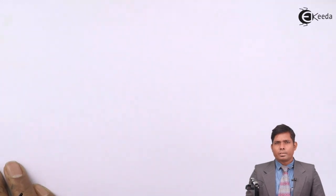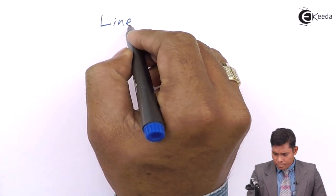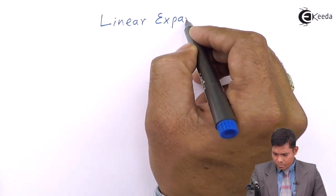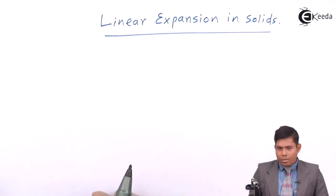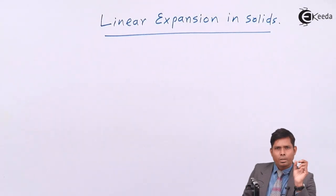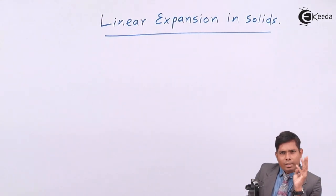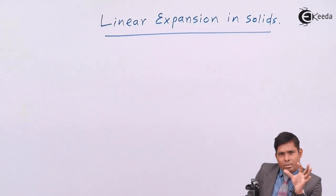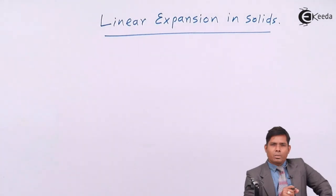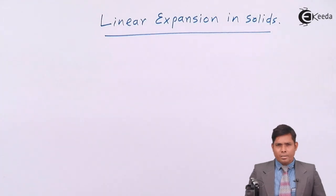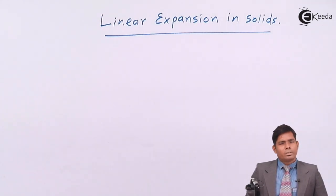Students will discuss today about linear expansion in solids. Solids are categorized into three types: one-dimensional, two-dimensional, and three-dimensional. A one-dimensional solid is like a rod whose other dimensions are neglected. A plate, where length and breadth are considered but thickness is neglected, is a two-dimensional object. And a three-dimensional object considers length, breadth, and height.